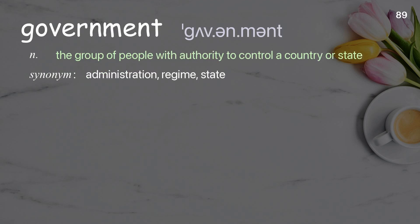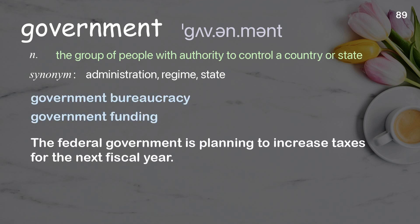Government: the group of people with authority to control a country or state. Examples: government bureaucracy, government funding. The federal government is planning to increase taxes for the next fiscal year.